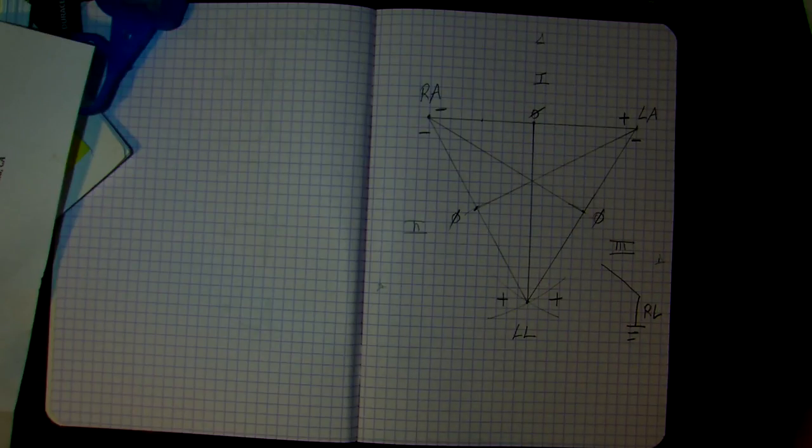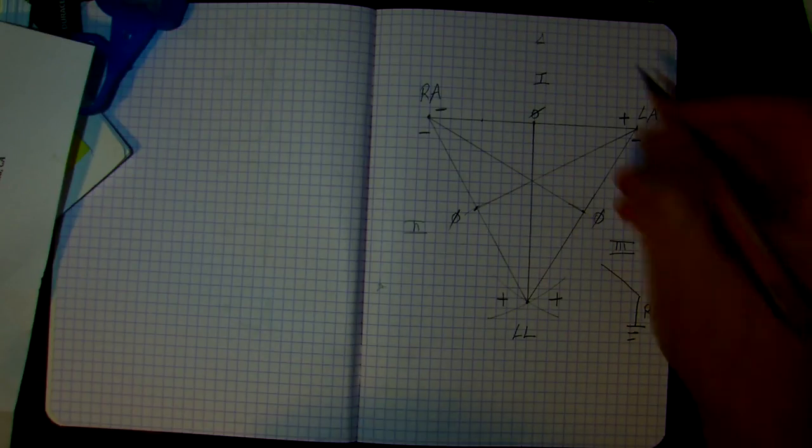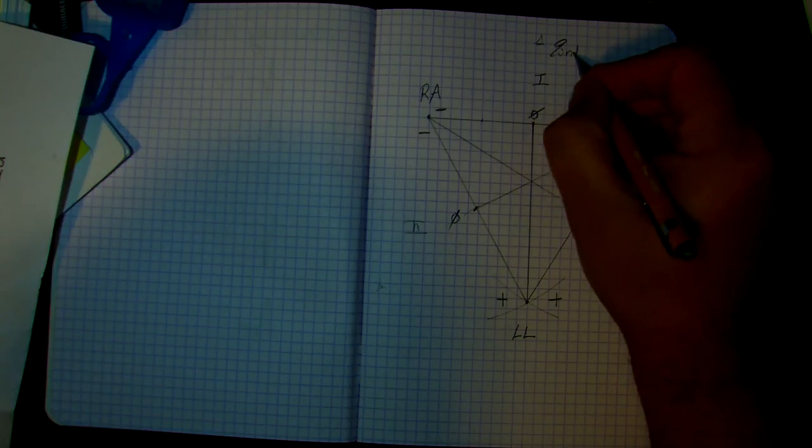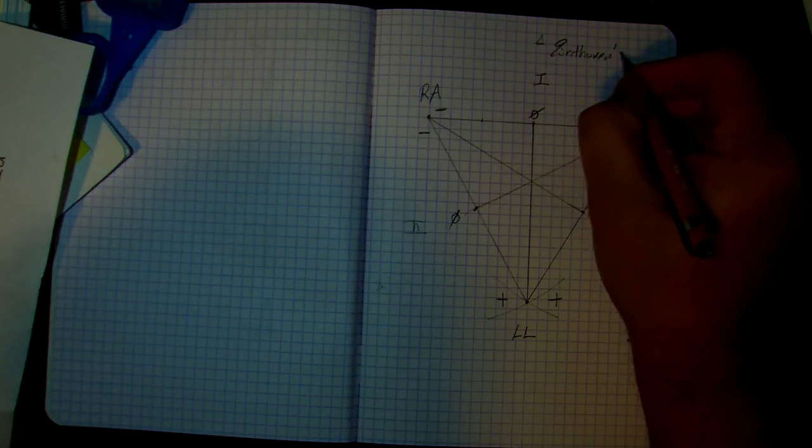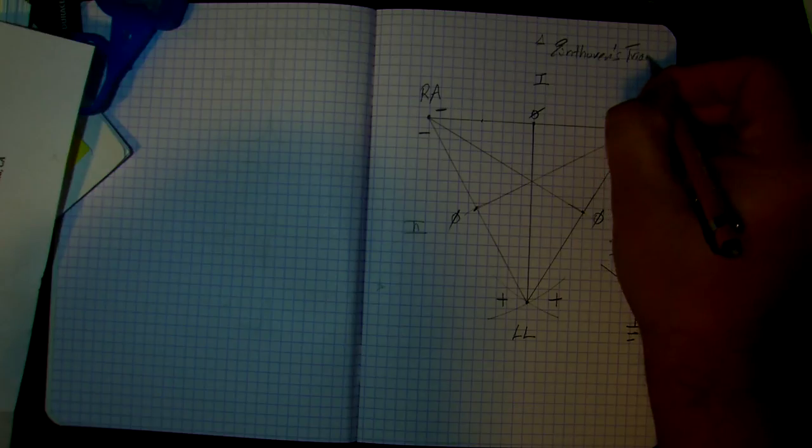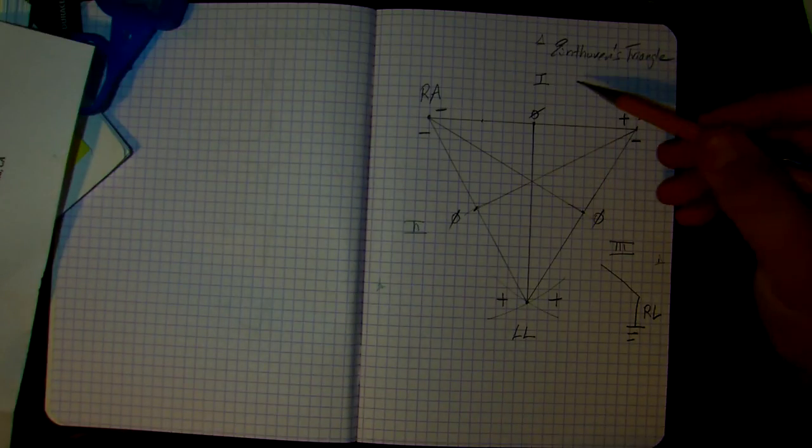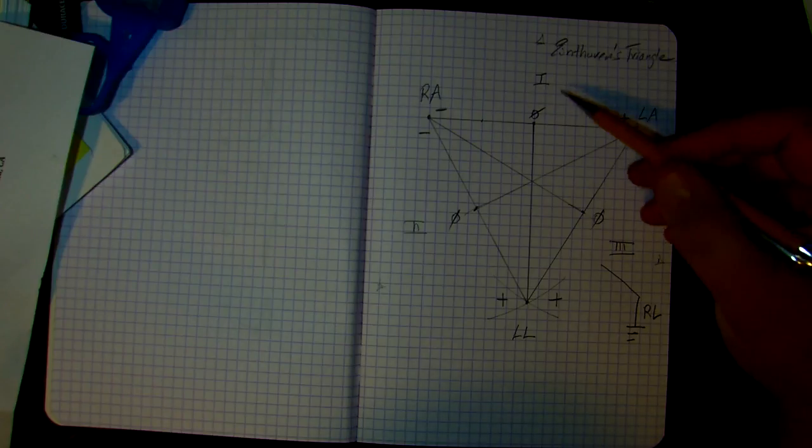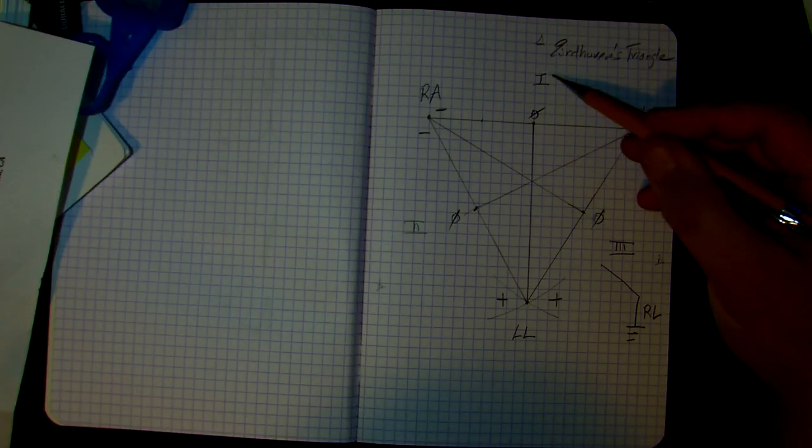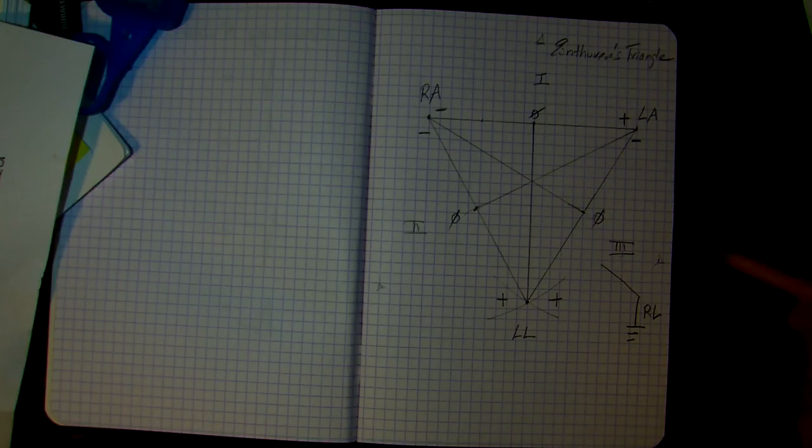I'm going to title this Eindhoven's triangle, and using the Eindhoven's triangle now, you can proceed with marking the R wave heights for lead one, lead two, and lead three.